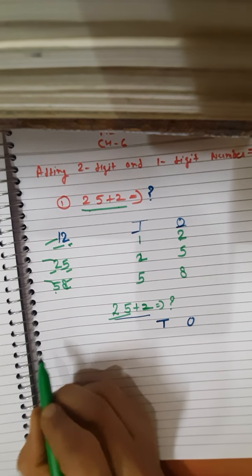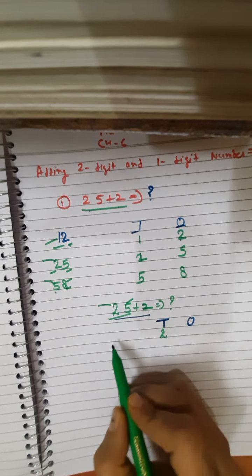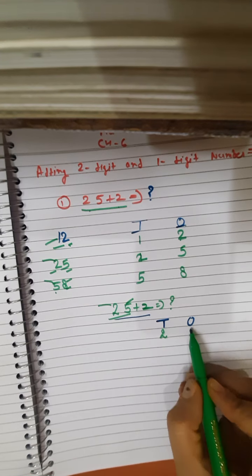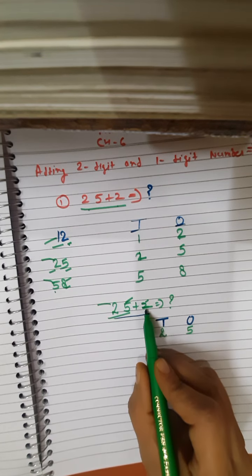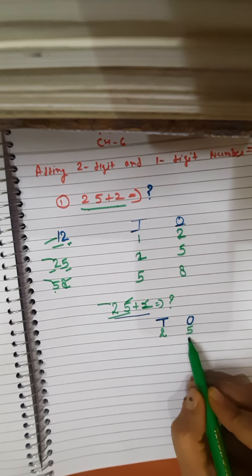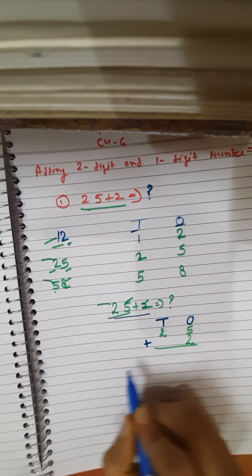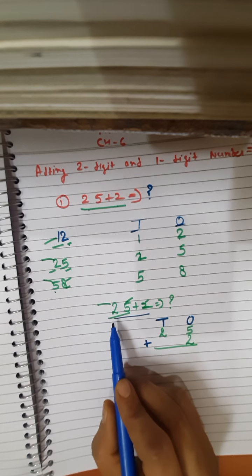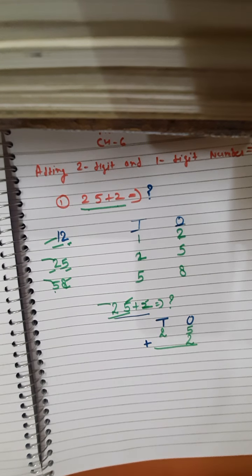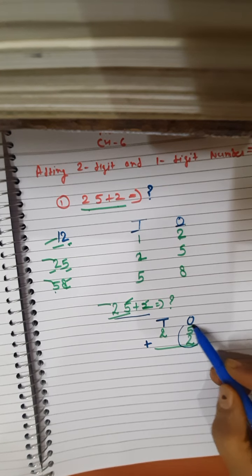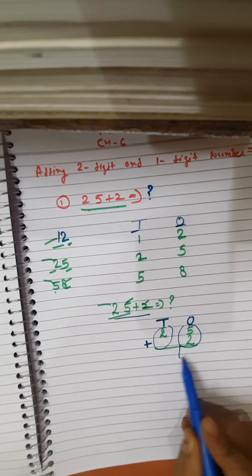In the number 25, the 2 comes first, so 2 goes to the 10s place, and the 5 comes last, so 5 goes to the 1s place. Here we have only 2 as the second number, so its place value is 1s — we write this 2 in the 1s place value. This is the first rule of addition: place the numbers as per their place values. Then the second rule: add the 1s place value and the 10s place values separately.